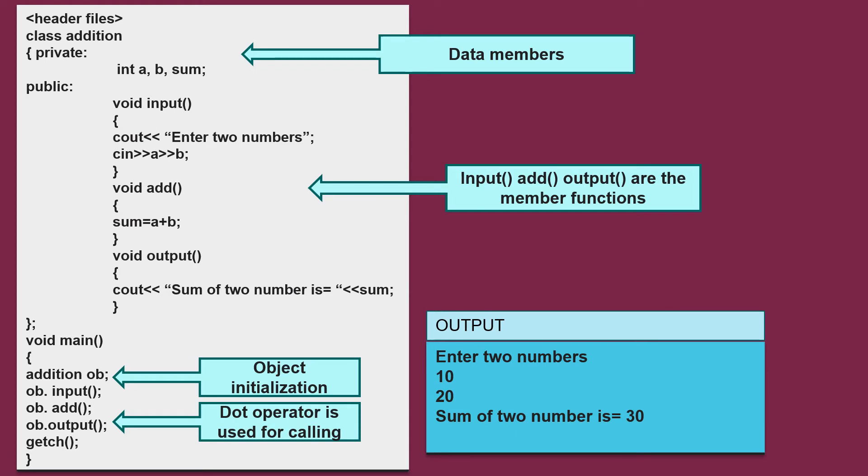Now, this is the simplest code for your class addition of two numbers. First, we will be including the header files followed by the initialization or declaration of your class with the help of keyword class and the name of class is addition. This is the start of your body of class.